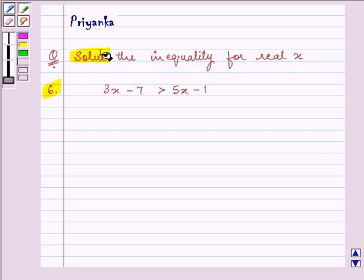We need to solve the given inequality: 3x minus 7 is greater than 5x minus 1.